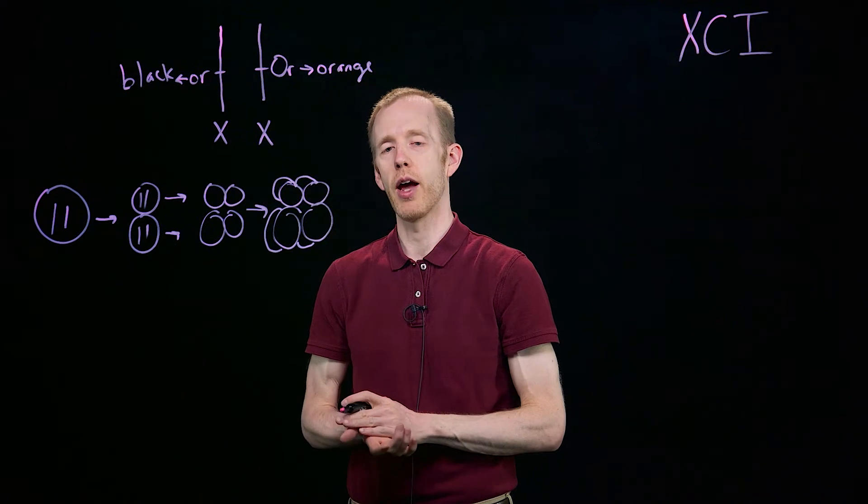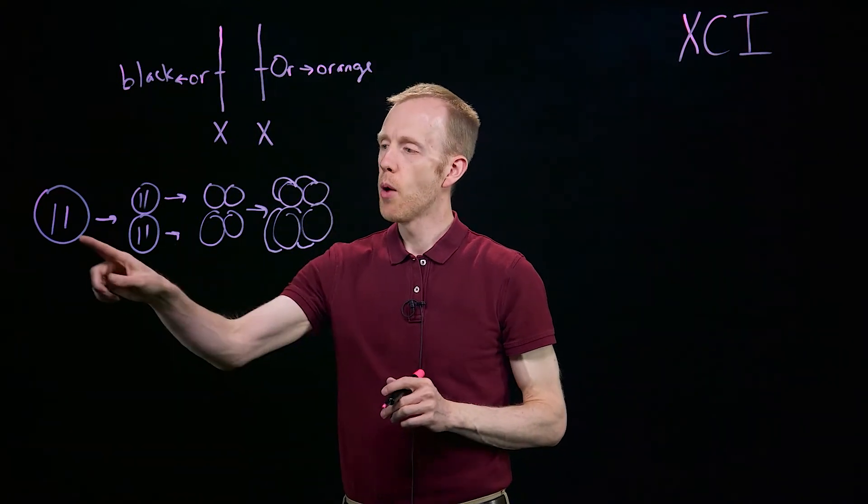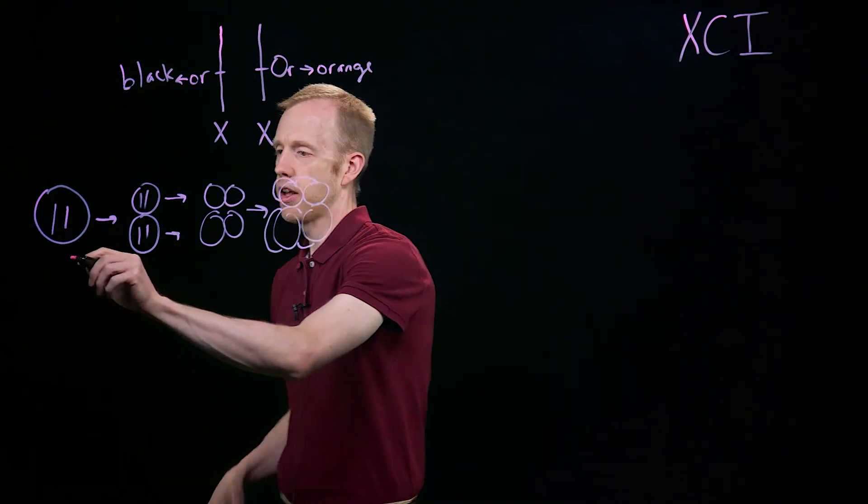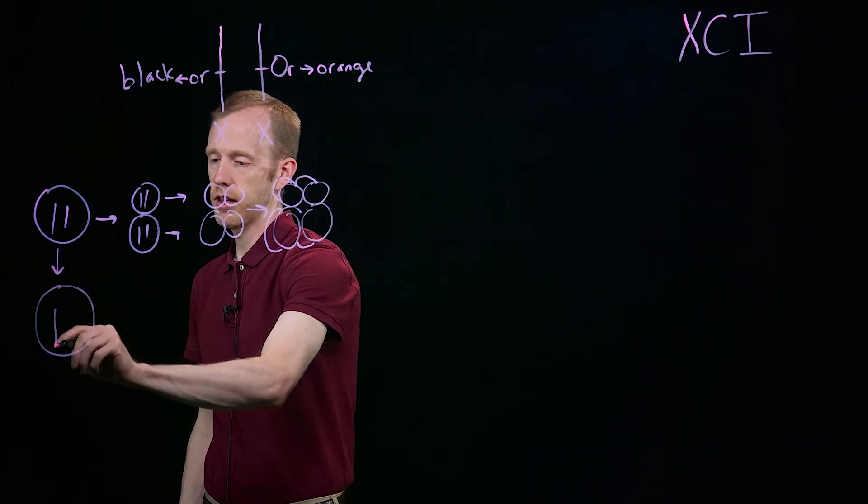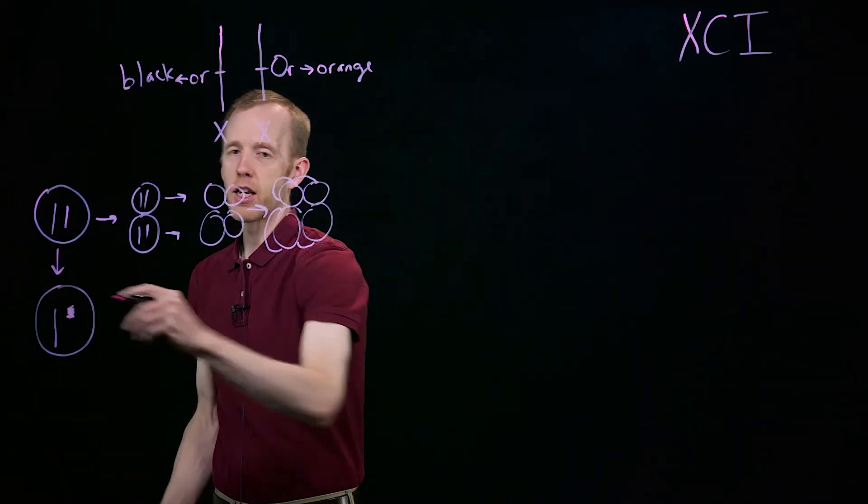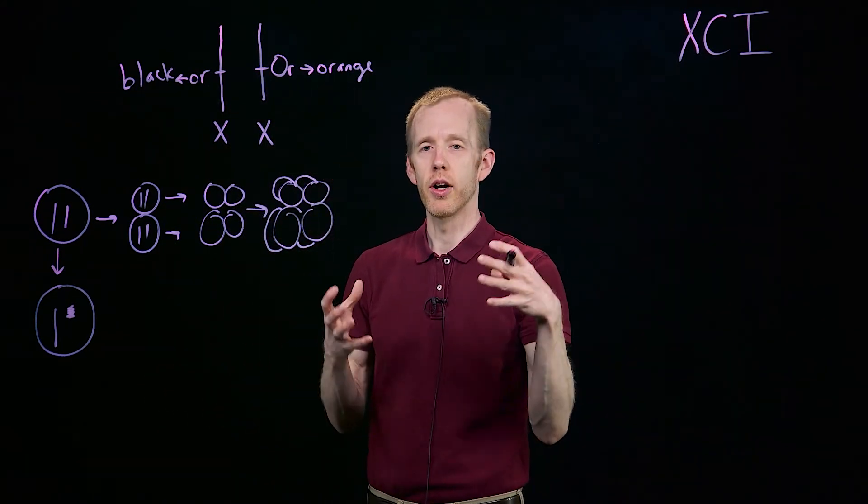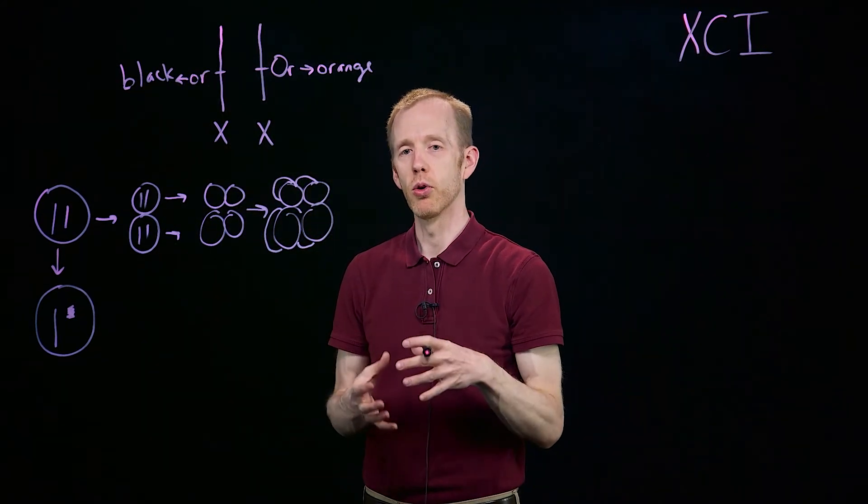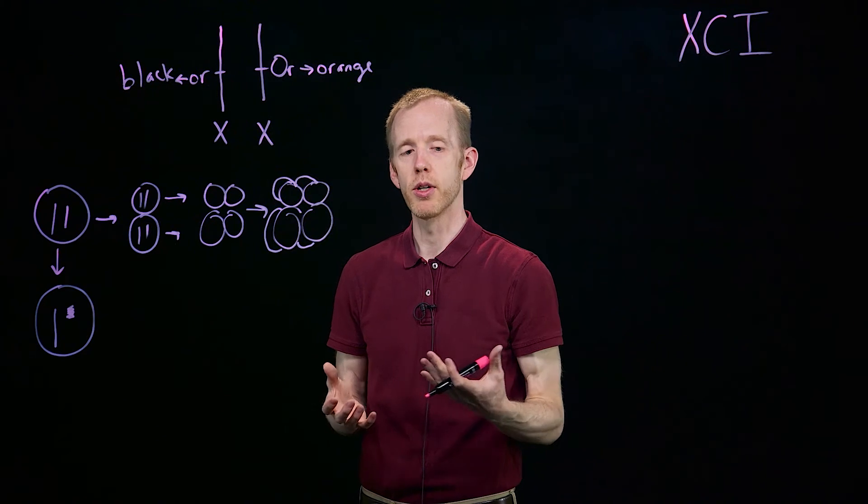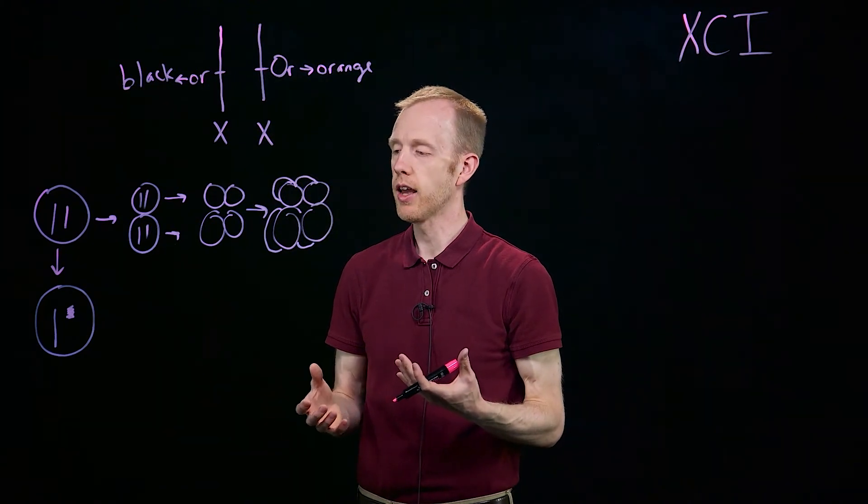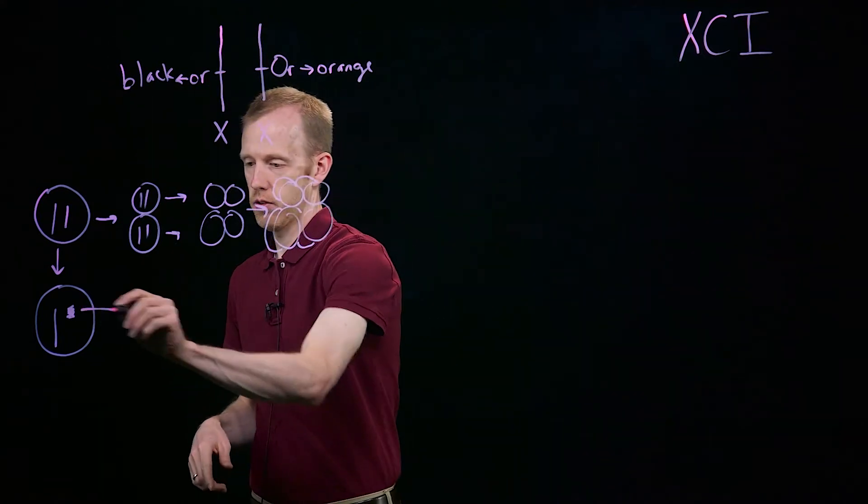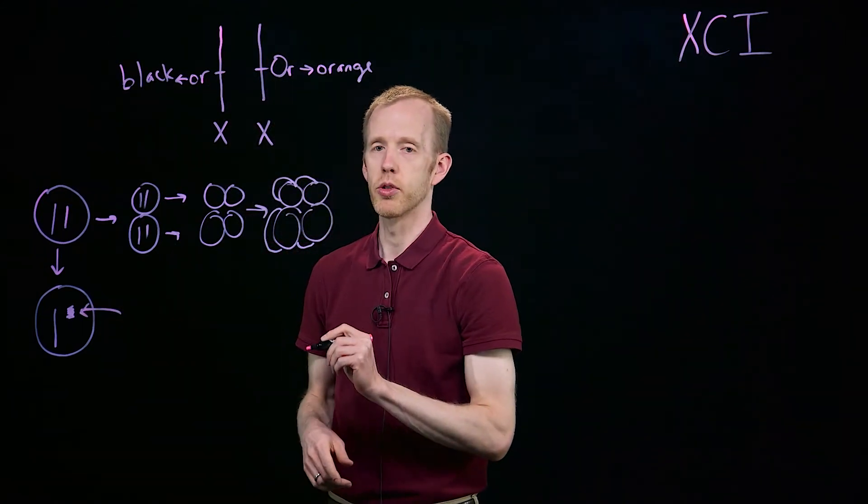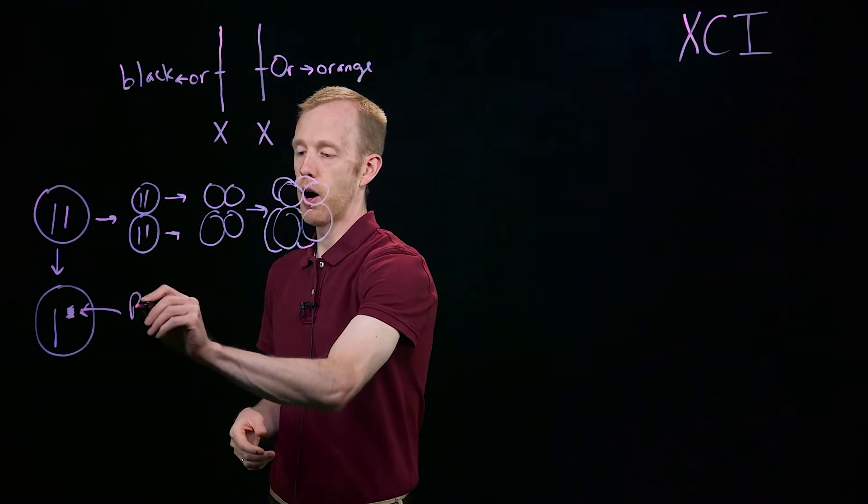You can watch another video to learn about heterochromatin and euchromatin. But what this essentially means is that one of those two X chromosomes gets turned off by compressing the DNA into such a tightly packed molecule of chromatin DNA plus the proteins that organize the DNA that no transcription can ever occur from that heterochromatinized X chromosome, which is also called a bar body.